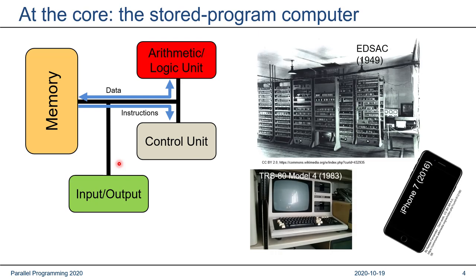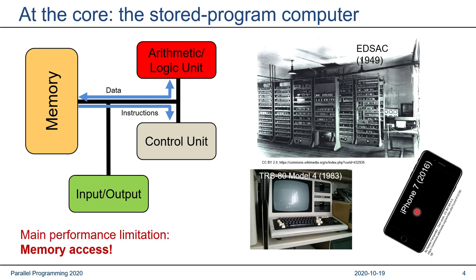Nobody has come up with a more powerful and more flexible concept. Starting from the first computers that actually used the stored program computer concept, like the EDSAC in 1949, via typical home and business computer systems in the 70s and 80s, even supercomputers and even your iPhone — all of those use the stored program computer concept. The main performance limitation is memory access. Memory can be built in very large quantities, but compared to anything that happens within the core, within the arithmetic logic unit or the control unit, memory tends to be slow because it's connected via wires, and wires are much slower than connections on the chip.